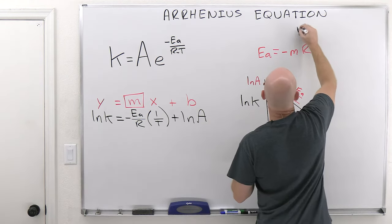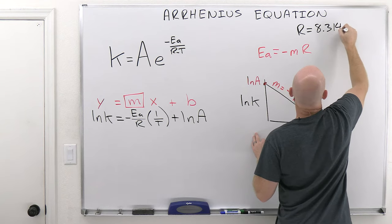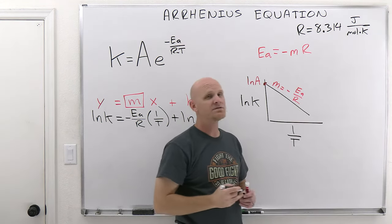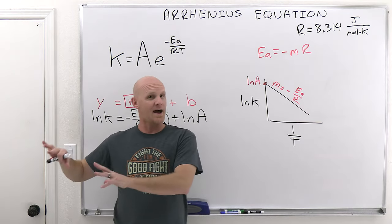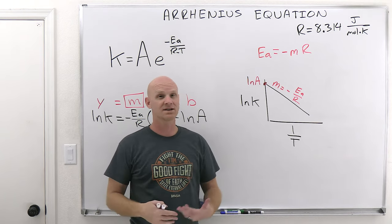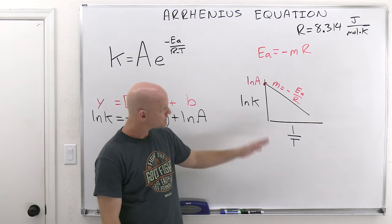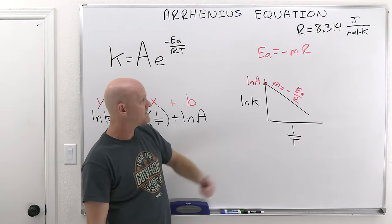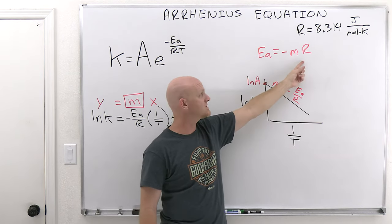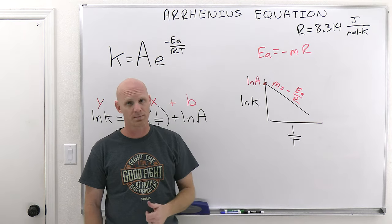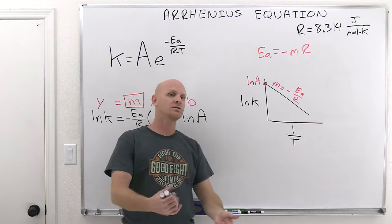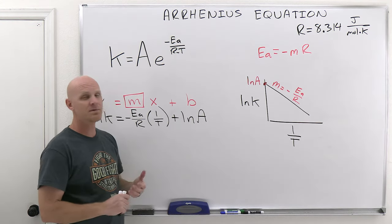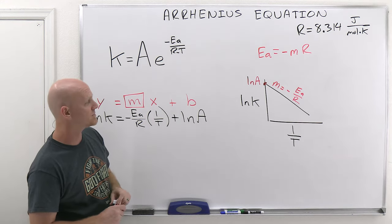One super important thing to know is the value of R — the universal gas constant. When dealing with energy, it's most commonly given as 8.314 joules per mole kelvin. When dealing with gases in the ideal gas chapter, you'll more commonly see 0.08206 liter·atmospheres per mole·kelvin. For energy equations, use the SI unit: joules per mole kelvin. Using that value of R, your activation energy will come out in joules per mole, but it's most commonly provided or asked for in kilojoules per mole, so you may need to divide by 1,000.